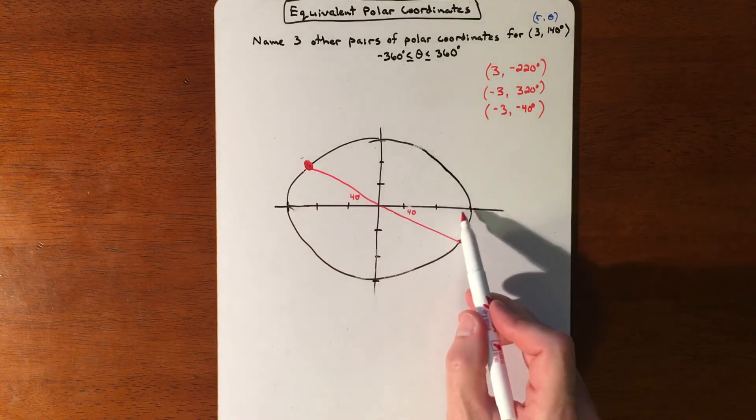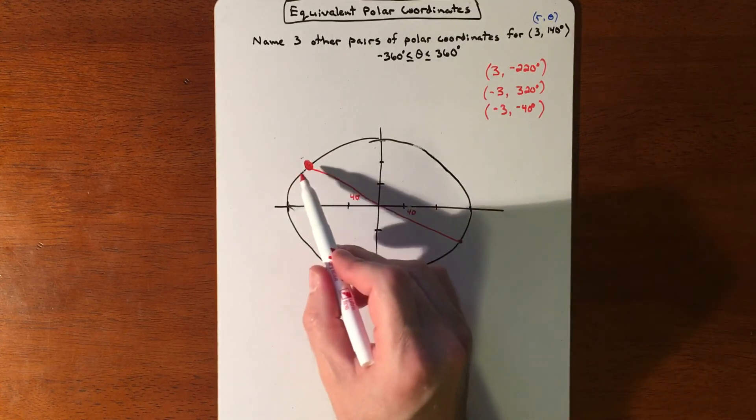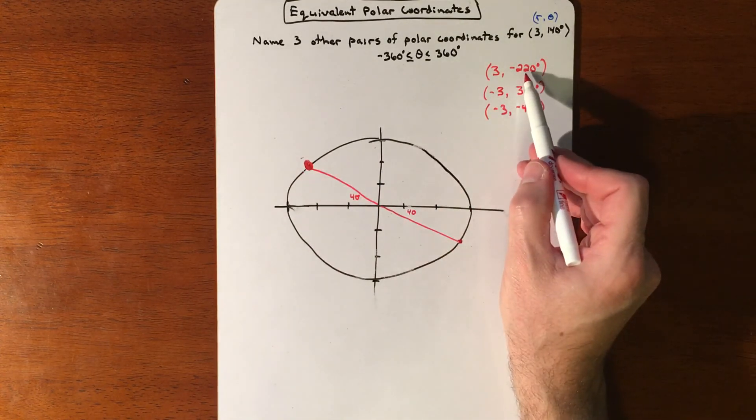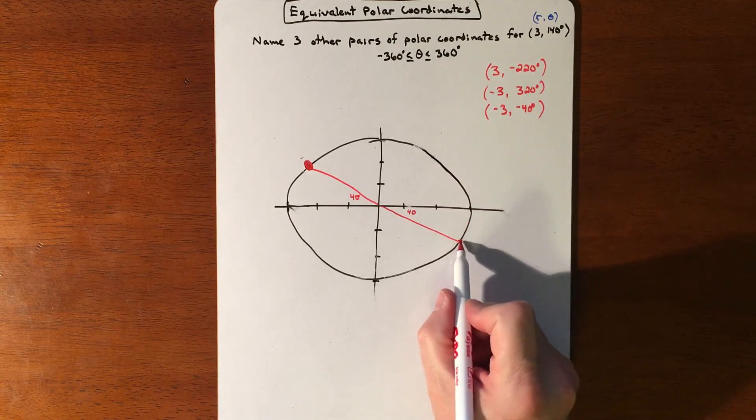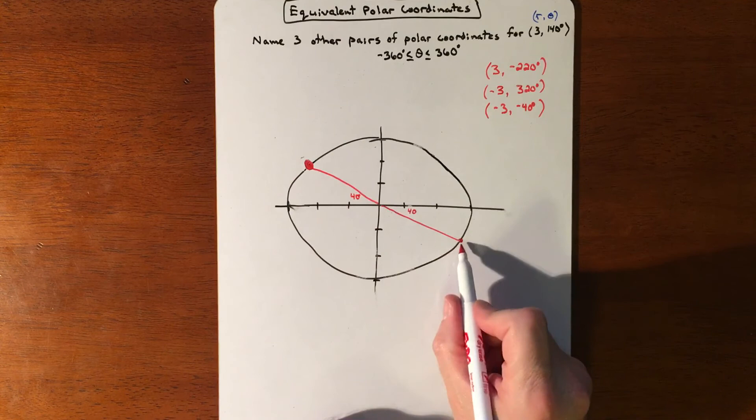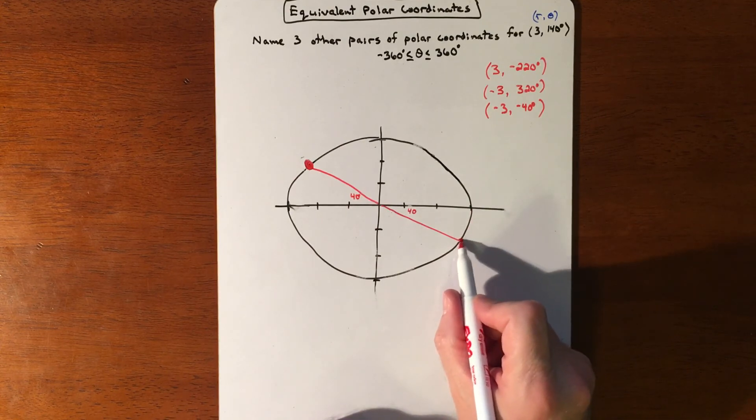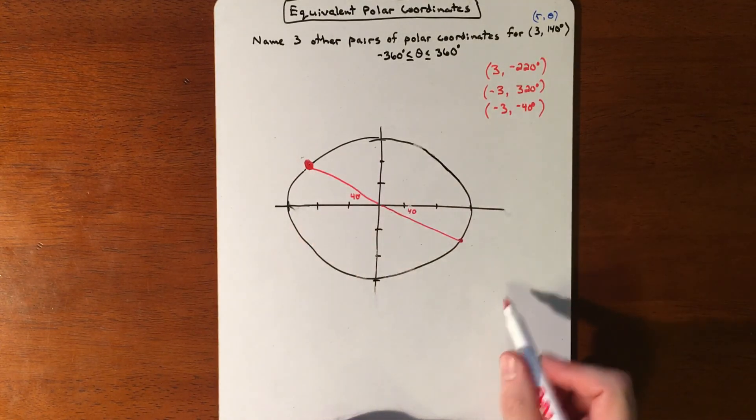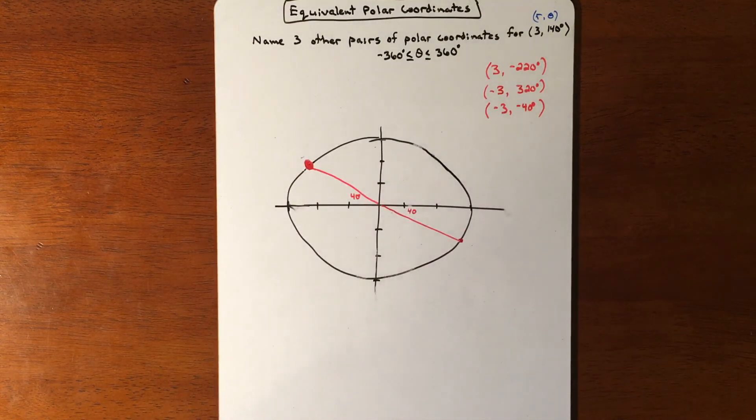The original point was 3, 140. And then I could have gone this direction instead and did my negative 220. Or I could be talking about the reflected point. And so figuring out that it takes 320 to get there or negative 40. And then having a negative radius to reflect it over to the original point that we're shooting for.